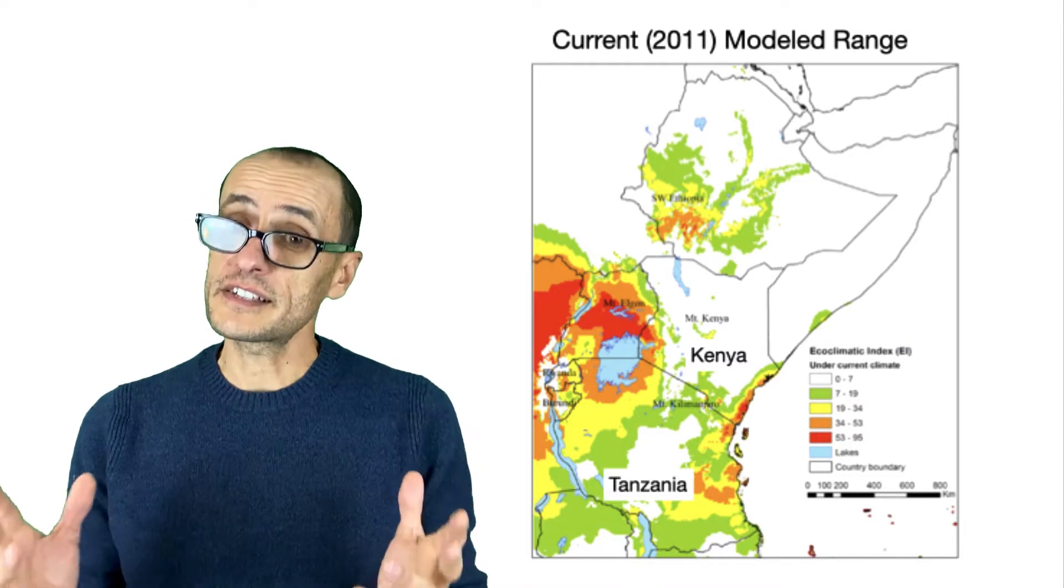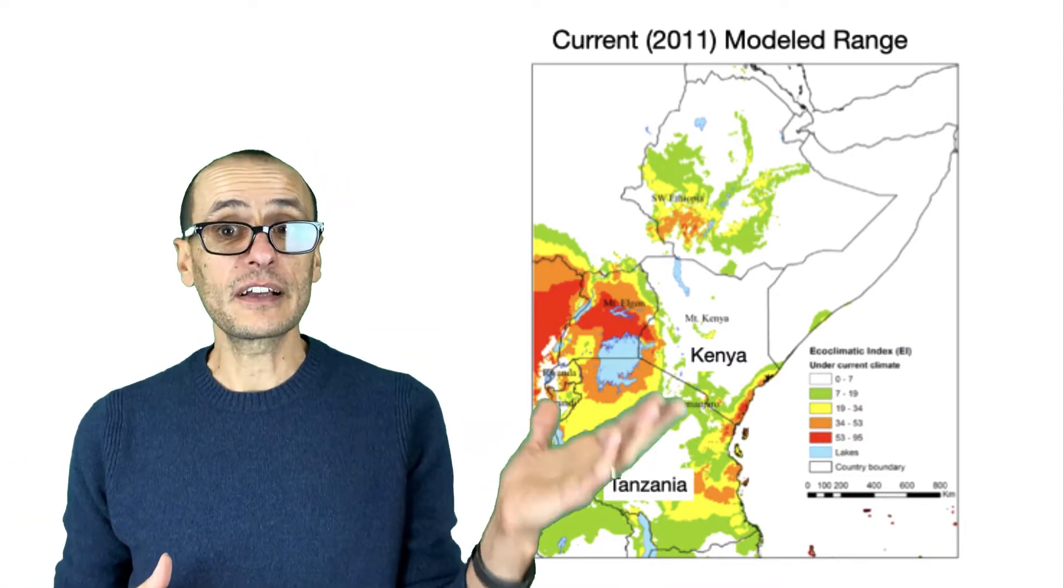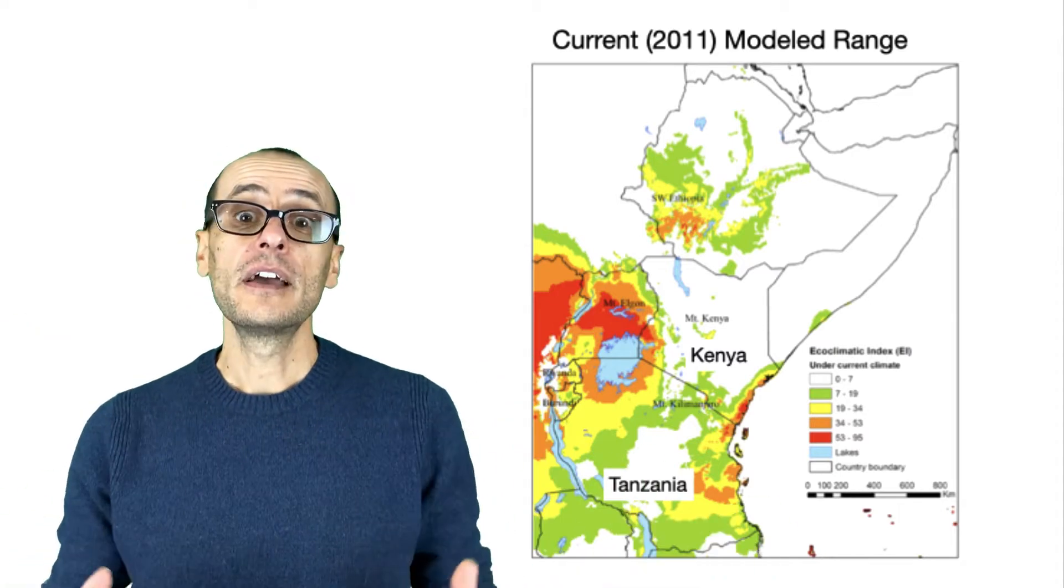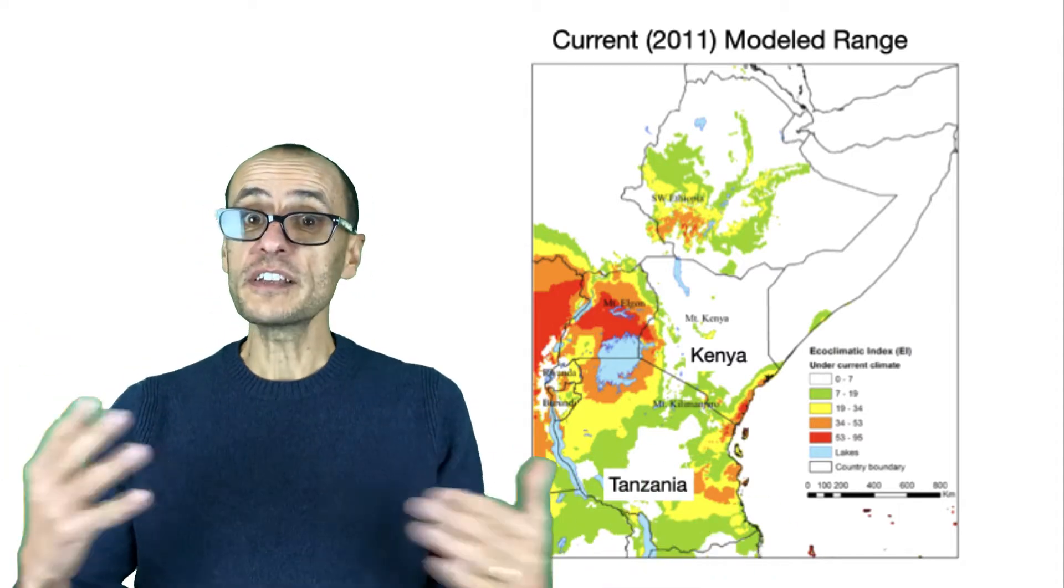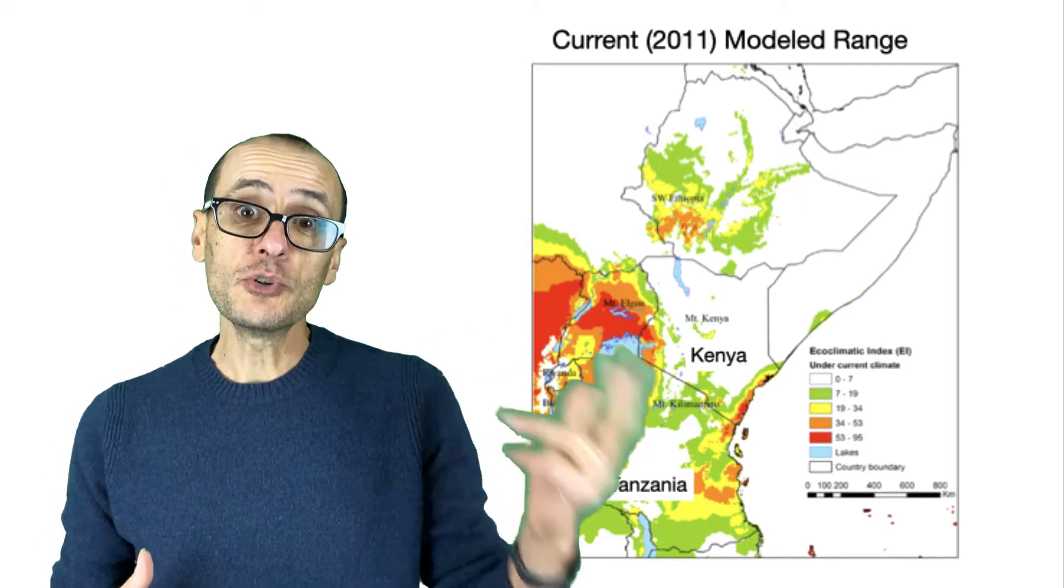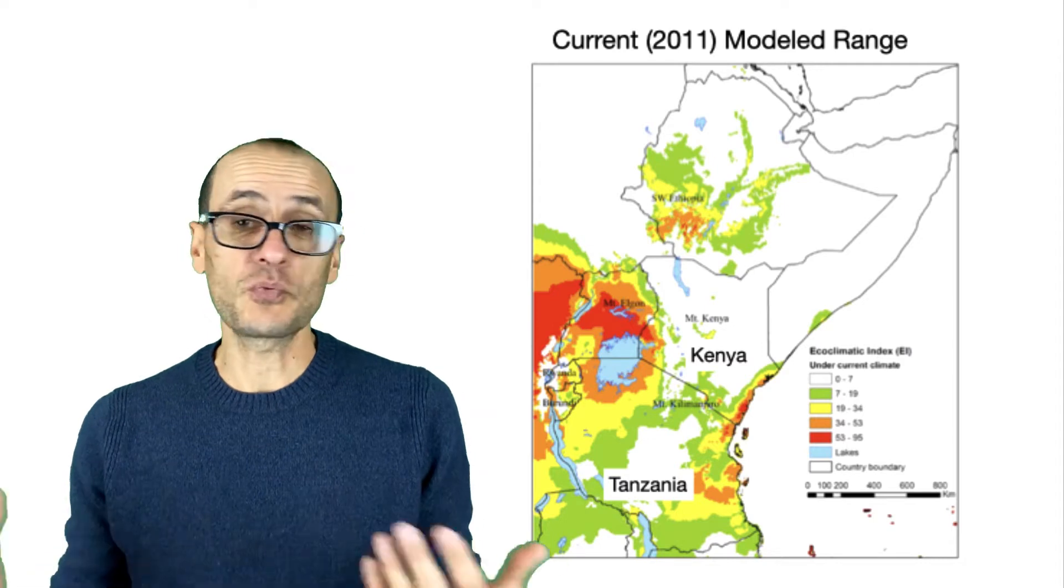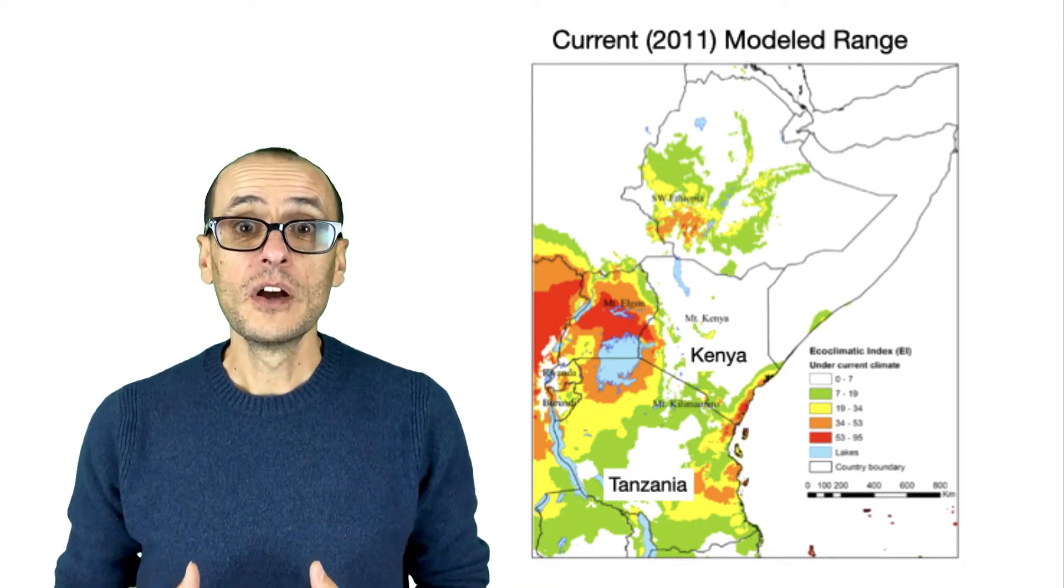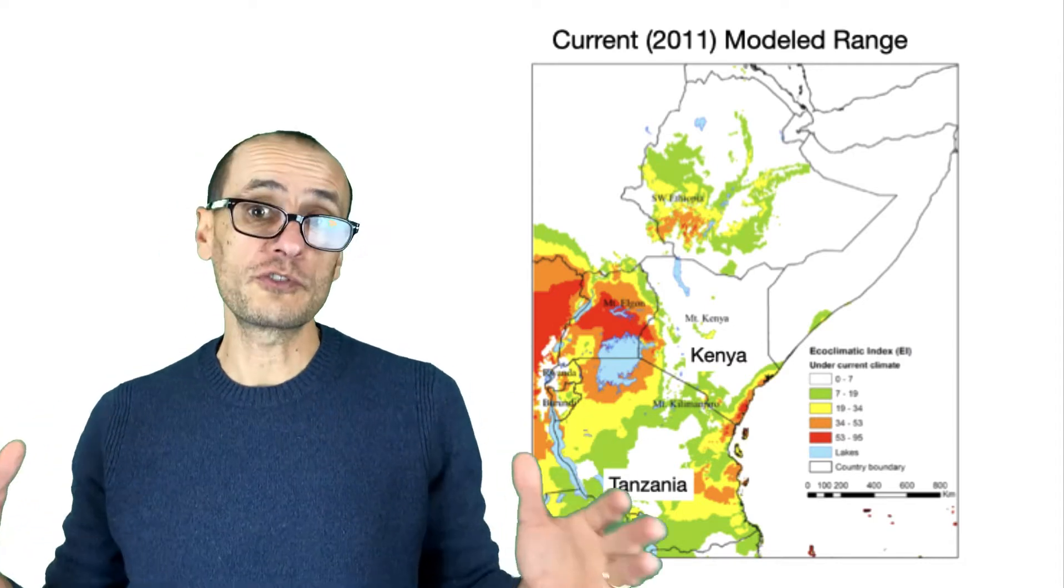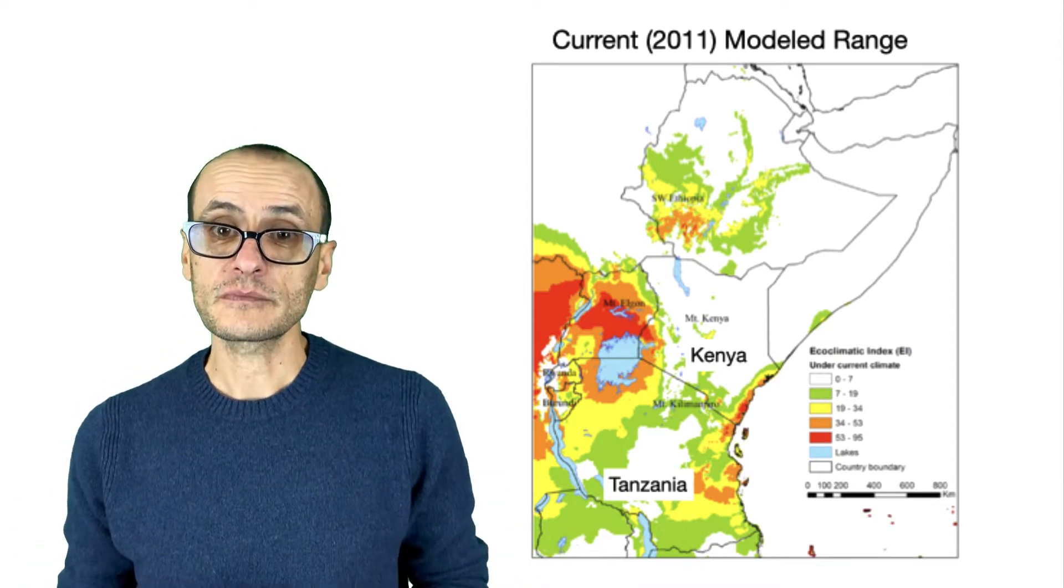And what these researchers were also able to do, with the extensive data that they had about the beetle's development, was to compare the climate conditions in the area and make a prediction about where these beetles should be able to do well. If they knew that it was going to be too hot, then this beetle is likely not going to do very well. It just won't be present. Or if it's too cold, or cold for too long, they won't develop fast enough and they shouldn't be very common.